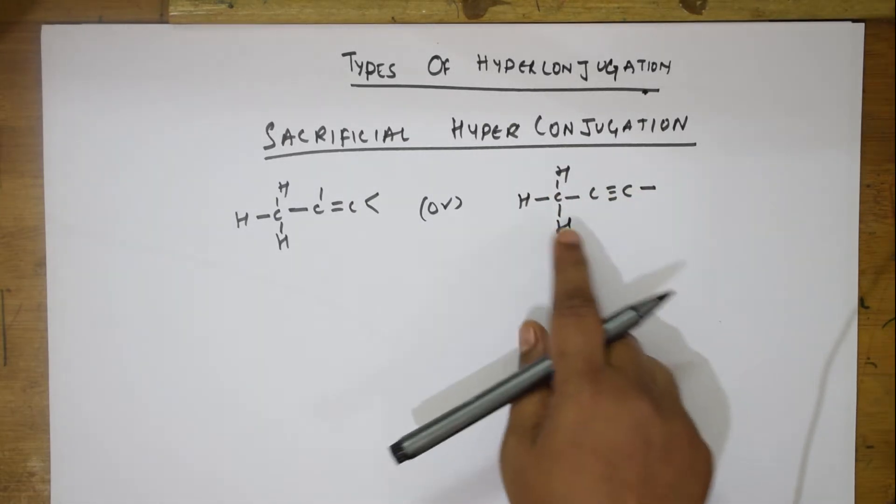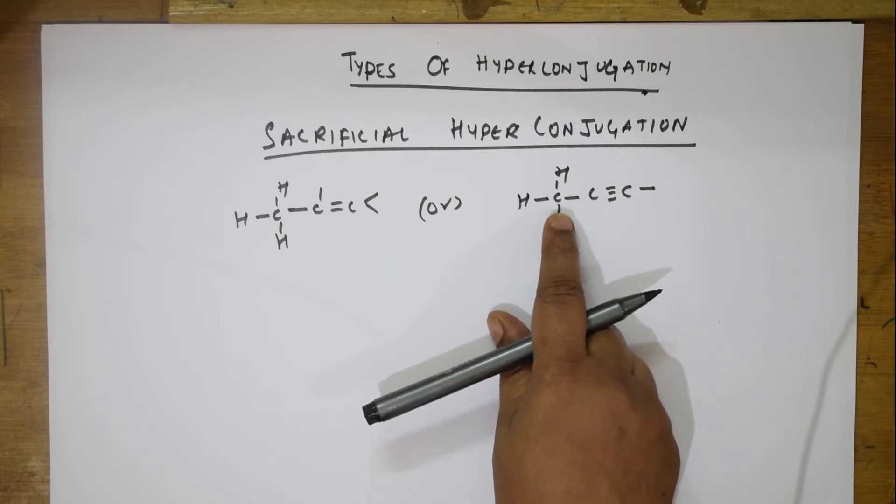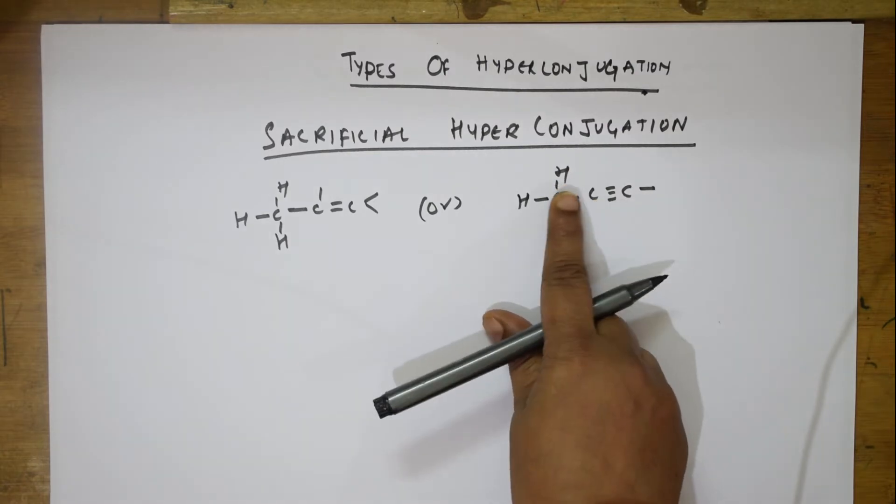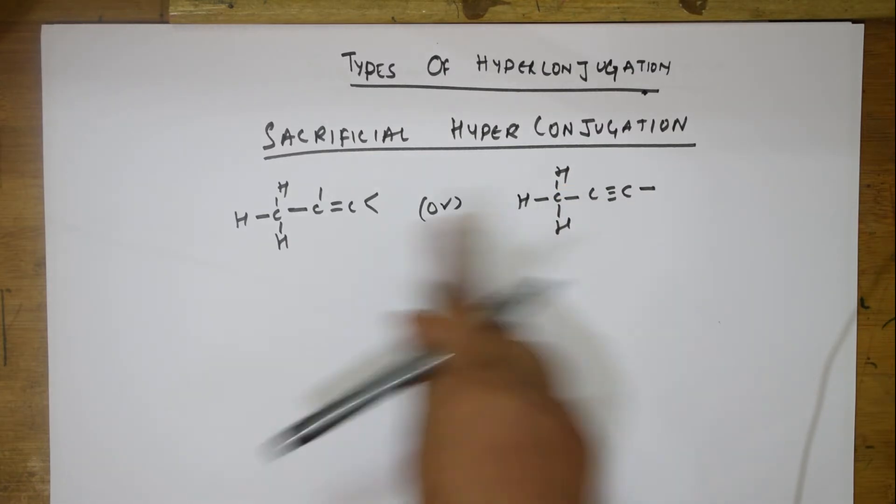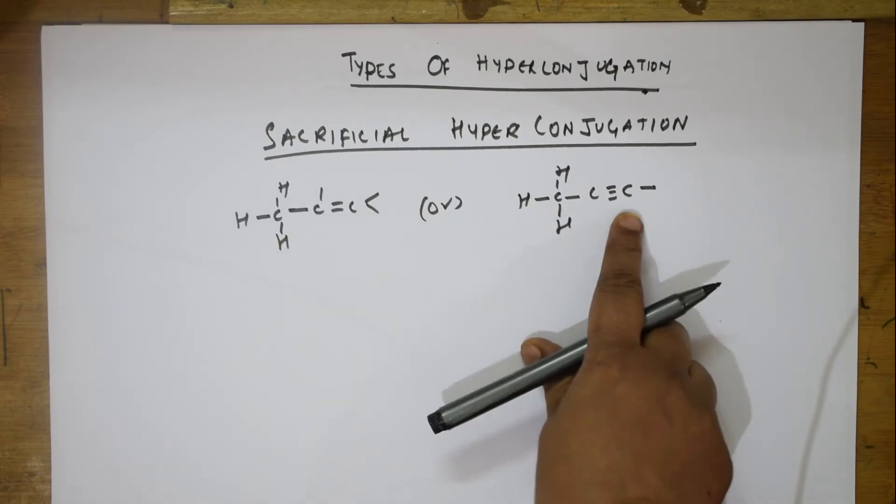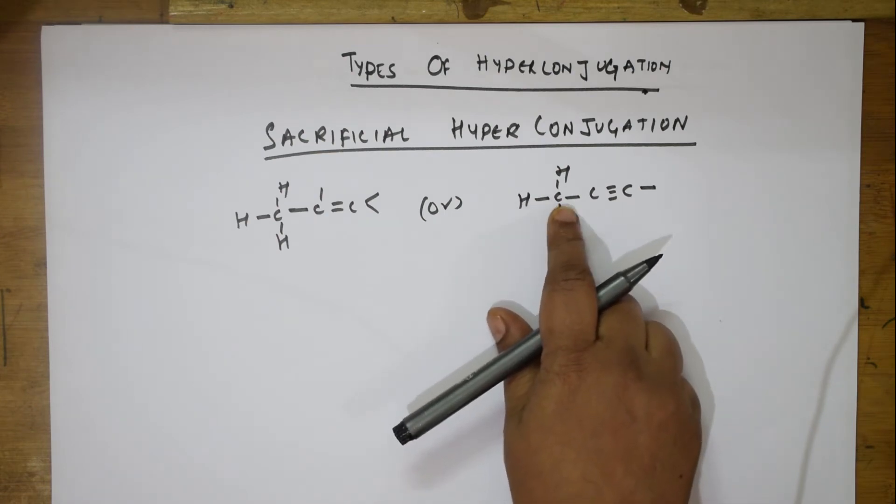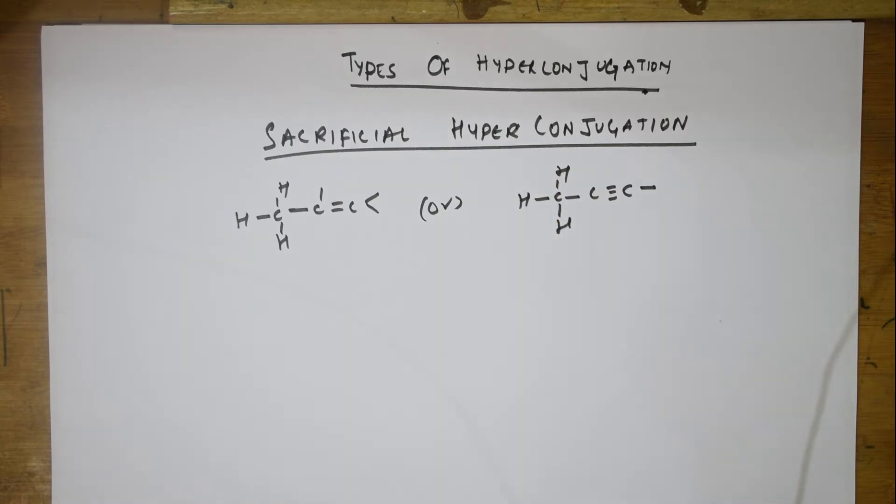The carbon atom of this alkyl group attached to the double bond must, one more condition is, it must at least contain one hydrogen atom in hyperconjugation. Once again, it should be alkyl group should be attached to the double bond or alkyl group should be attached to the triple bond. That is the first thing. Second condition, that carbon of the alkyl group which is getting attached should have a hydrogen. Remember that. Then we can start.